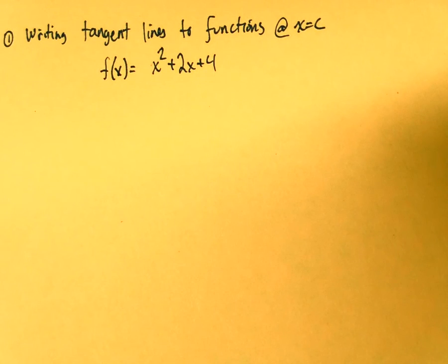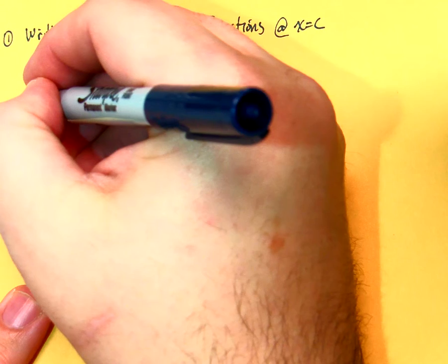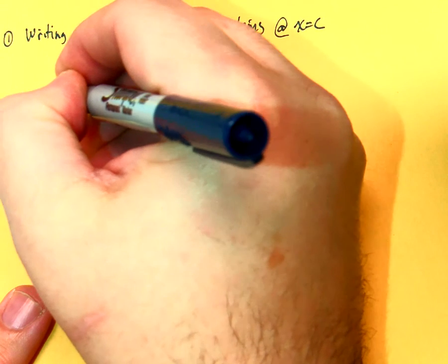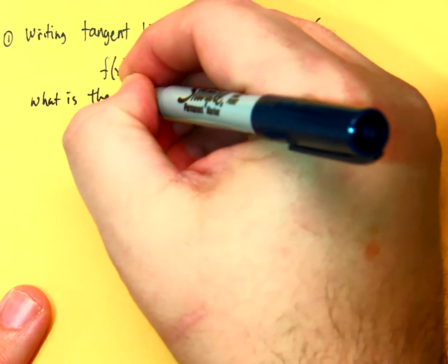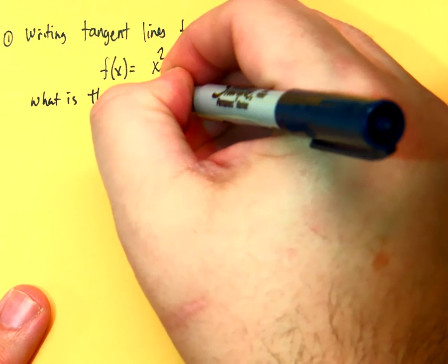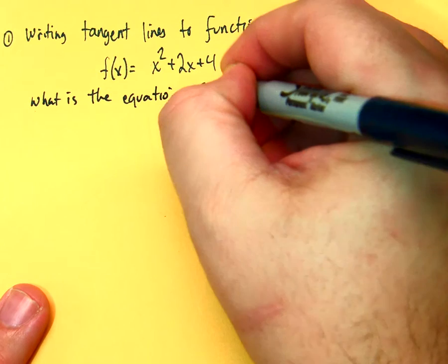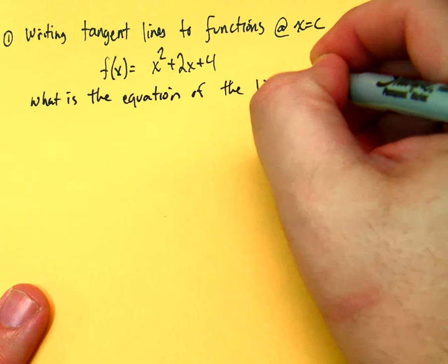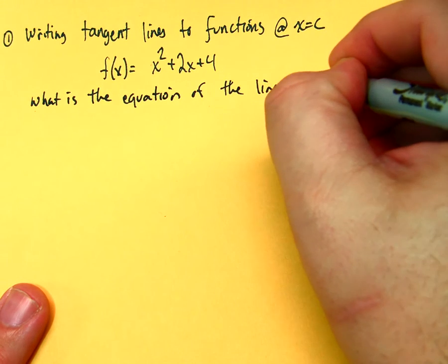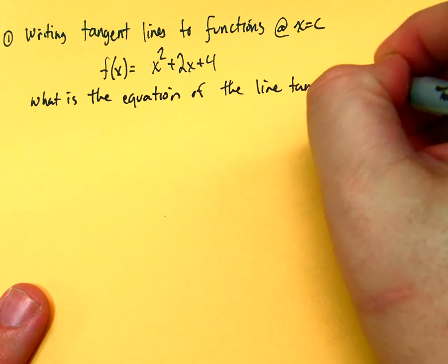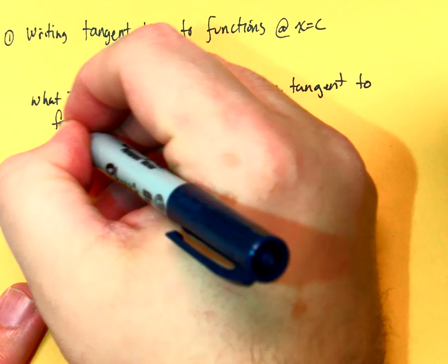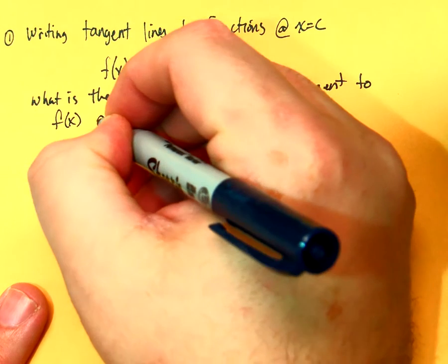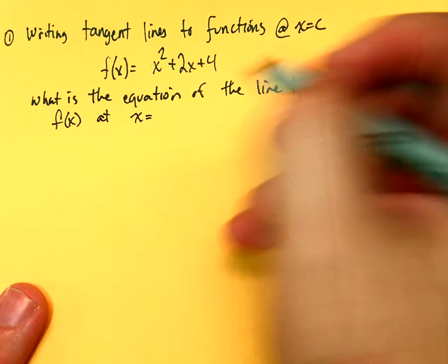Alright, let's make sure it looks nice here. Now, what is the equation of the line tangent to f of x at x is equal to, let's say, 3?